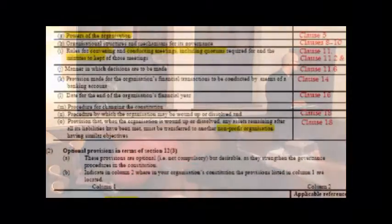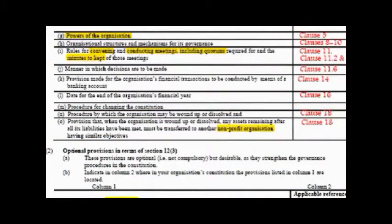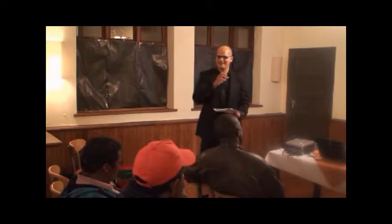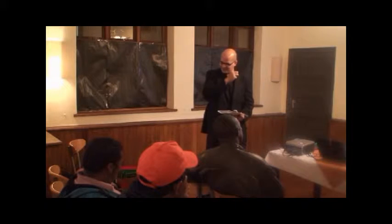At the bottom, they say that if the organization is dissolved, any remaining assets, after liabilities have been met, must be transferred to another non-profit organization with similar objectives. So it's important that this information is in the constitution. If your constitution just says it will be transferred to another organization, someone at the NPO directorate might say — well, it doesn't say another non-profit organization. It must say another non-profit organization.